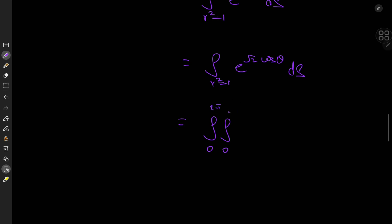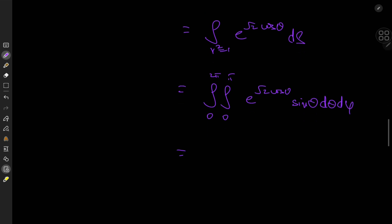of what exactly, that's e to the root 2 cosine theta, and the area element is sine theta d theta d phi. So the integrand is independent of phi, so we just get 2pi outside, that's the evaluation of the phi integral.